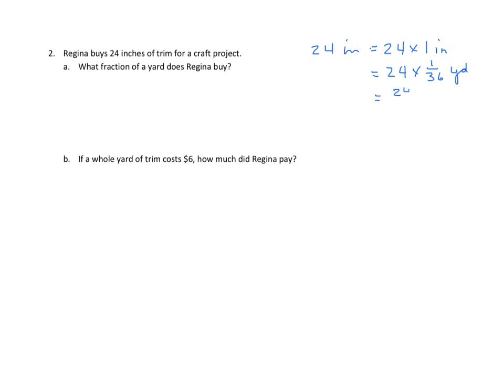We now have 24 times 1 over 36. And we look at 24 and 36. They have common factors. We can divide both of those by 12. 24 divided by 12 is 2. 36 divided by 12 is 3. So, now we have two-thirds of a yard. So, the answer is Regina bought two-thirds of a yard.